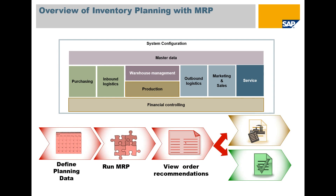Here's a graphic overview of the plan. We've got our master data that overlies everything, and from there we do purchasing, inbound logistics, warehouse management, production, outbound logistics, marketing, sales, and service. So define the planning data based on forecasts and past purchases, run the MRP, view the order recommendations, and then from there you generate production orders or purchase orders.